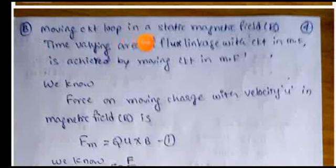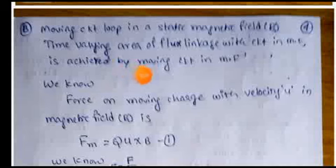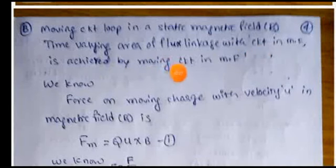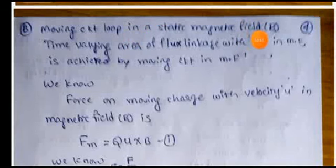In the second case, the circuit is moved in a static magnetic field. The area of flux linkage with the circuit varies with time by moving or rotating the circuit in a steady magnetic field. The technique involves moving the circuit in the static magnetic field to make the area of flux linkage time-varying.